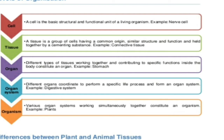These tissues work together; they come together, work together, and perform a specific function to form an organ. Various organs work in coordination with each other. They perform their own specific functions and work in coordination to form an organ system. These organ systems together simultaneously work to bring about life processes, and where these life processes are present, that is known as an organism.